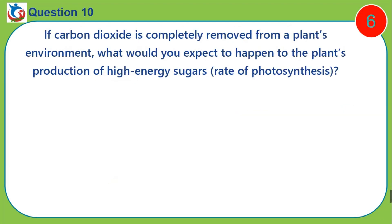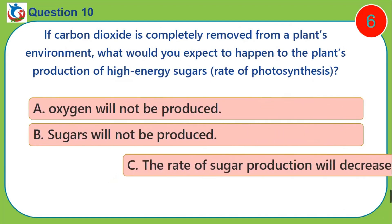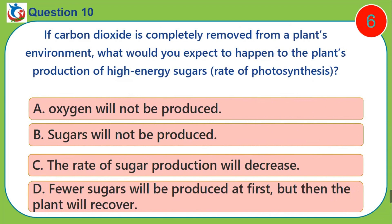Question ten: If carbon dioxide is completely removed from a plant's environment, what would you expect to happen to the plant's production of high energy sugars? A) oxygen will not be produced, B) sugars will not be produced, C) the rate of sugar production will decrease, D) fewer sugars will be produced at first but then the plant will recover.